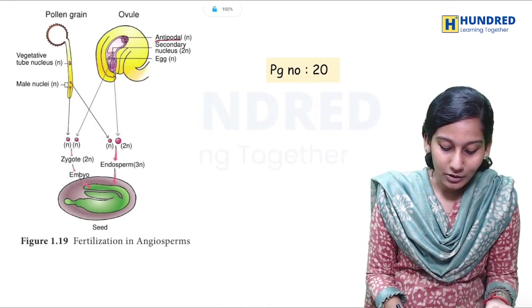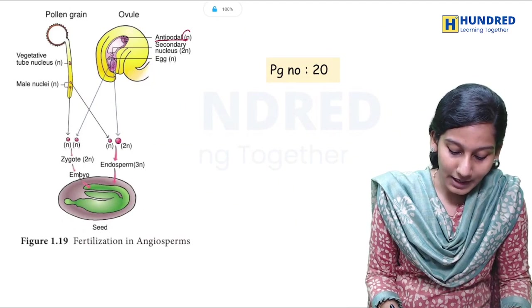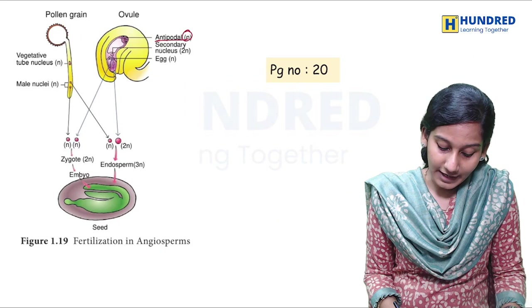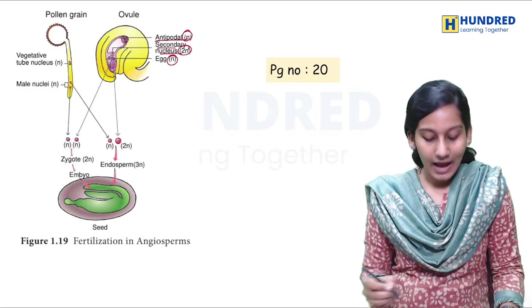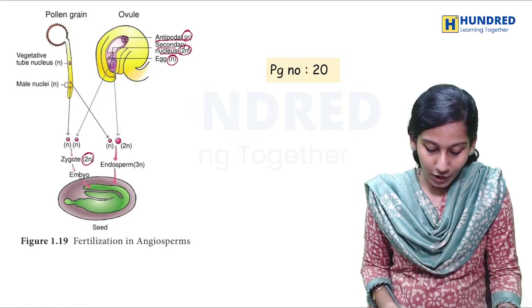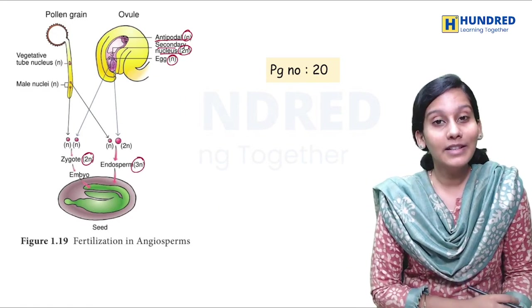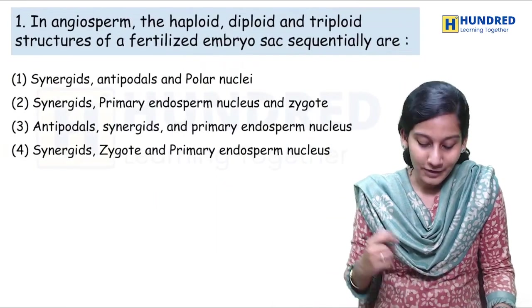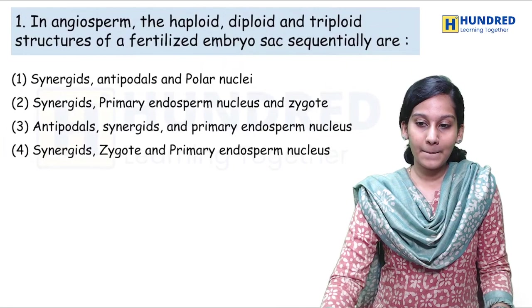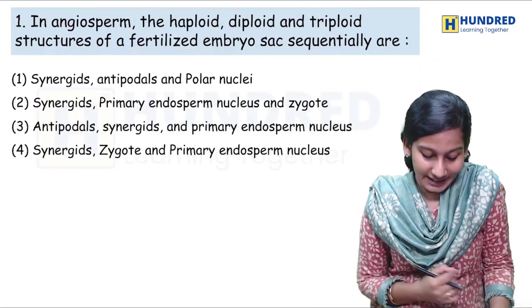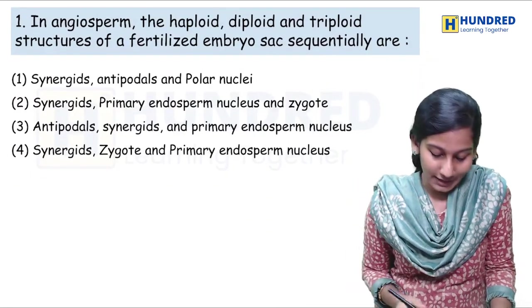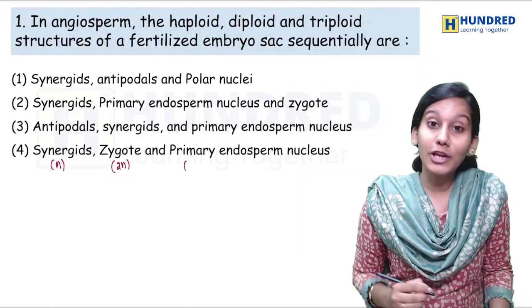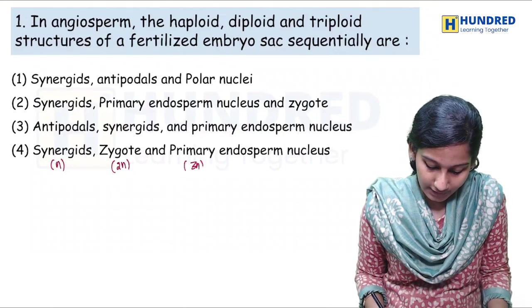So in the picture, we can make out the antipodal — it is represented by N, that is haploid. The same applies with the synergids. Secondary nucleus is 2N, egg is haploid, and even the zygote is diploid, and endosperm is triploid. So if we look at this picture, we will not get the answer to this question directly. The right answer is option 4 — synergids are haploid, zygote is diploid, and the primary endosperm nucleus is a triploid structure. So option 4.